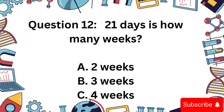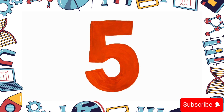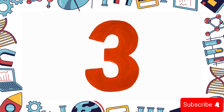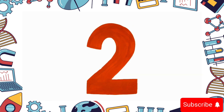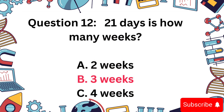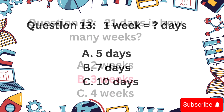Question 12. 21 days is how many weeks? A: 2, B: 3, or C: 4? Correct — it's B: 3 weeks, because 21 divided by 7 equals 3.